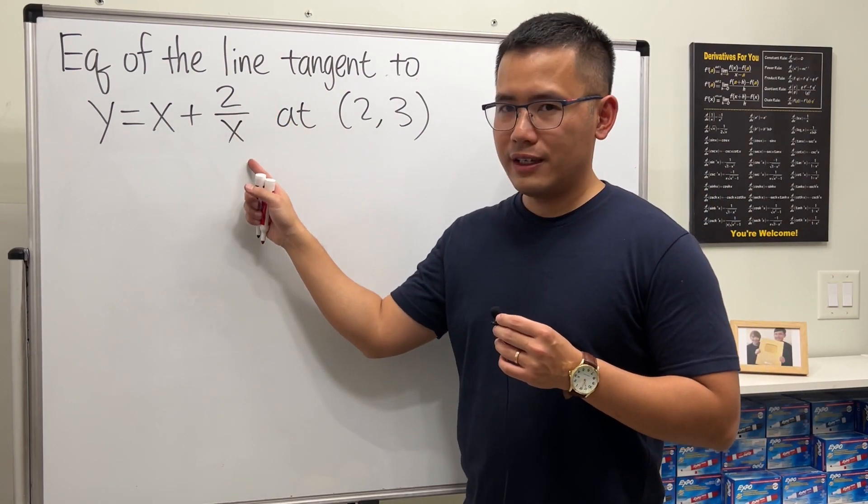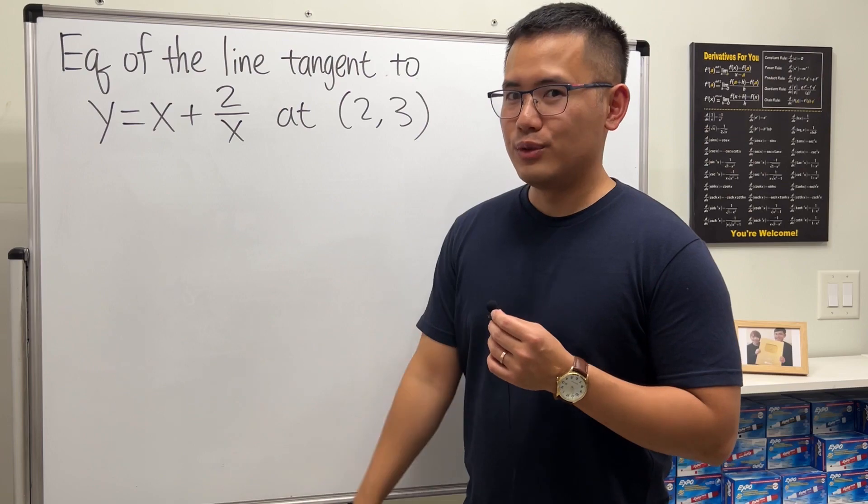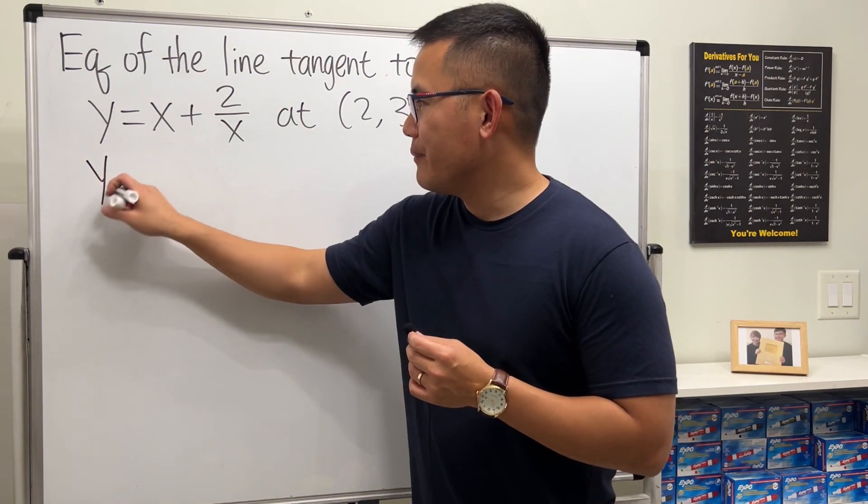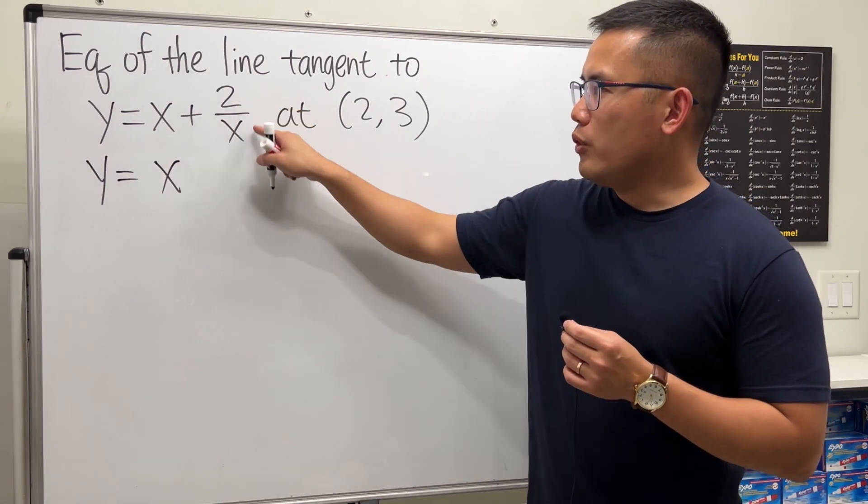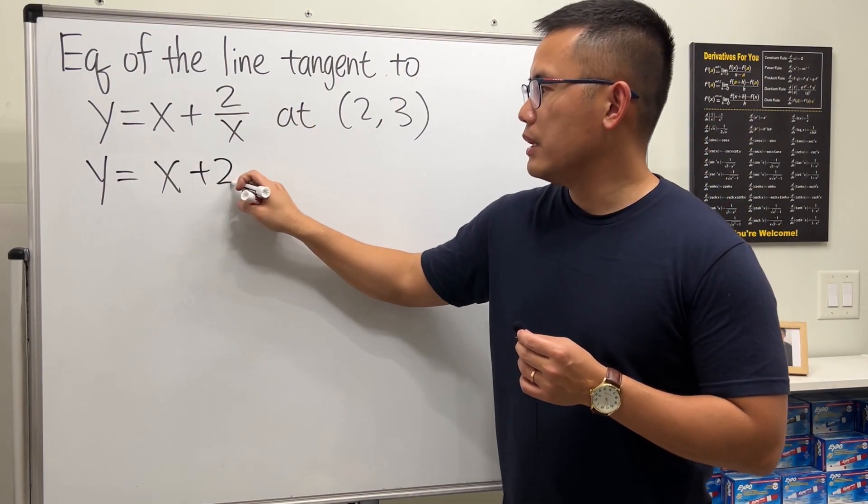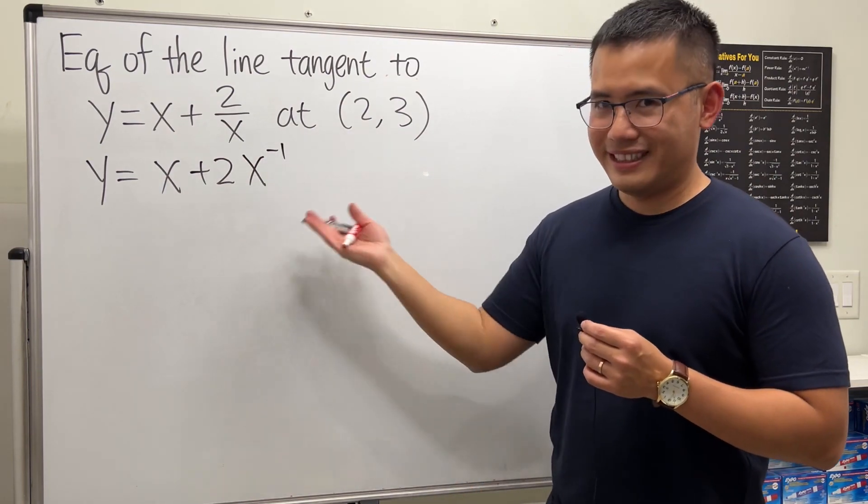Notice we have 2/x—we have to rewrite that to use the power rule. So y = x is still x, but 2/x is written as plus 2 times x to the negative 1 power.